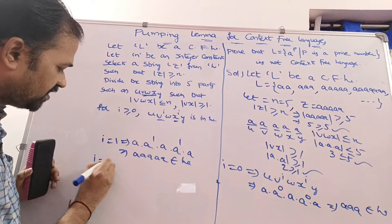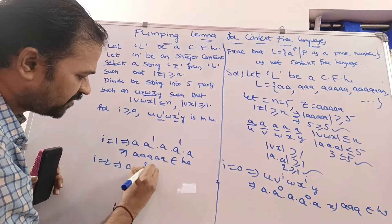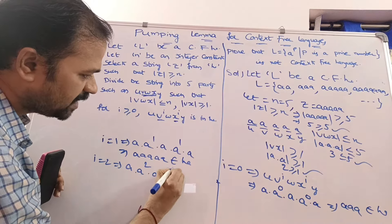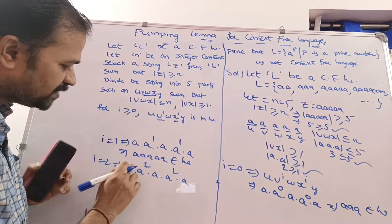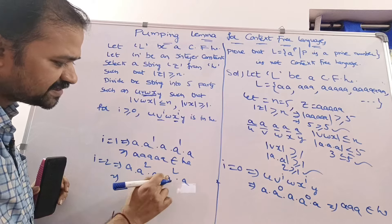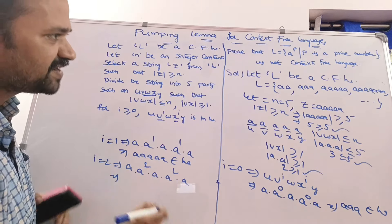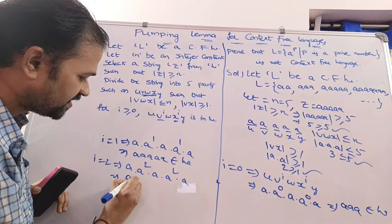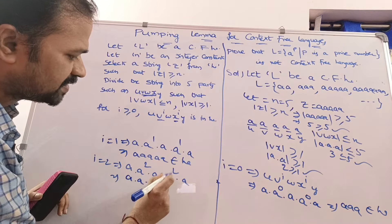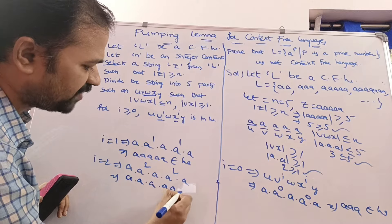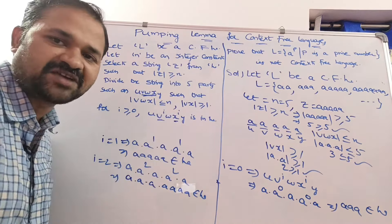For i = 2: u·v^2·w·x^2·y = a·a^2·a·a^2·a. Counting: 1 + 2 + 1 + 2 + 1 = 7 a's. So we get a^7. Since 7 is a prime number, a^7 is also present in the language.